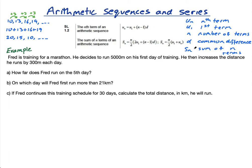S of n is the sum of n terms. I'm going to go straight into an example and go through how we use these formulae to solve a given problem. Fred is training for a marathon. He decides to run 5,000 meters on his first day of training, then increases the distance he runs by 300 meters each day. How far does Fred run on the fifth day?